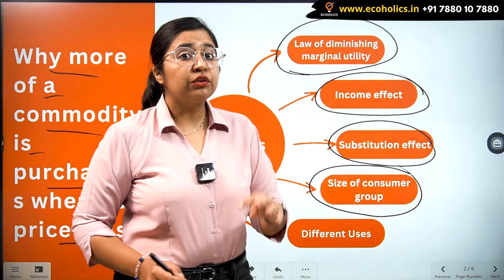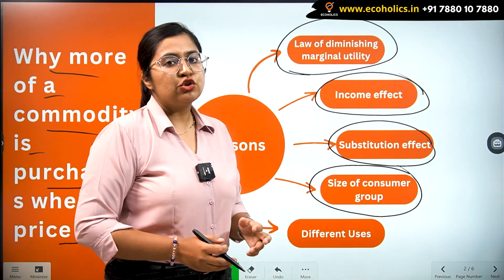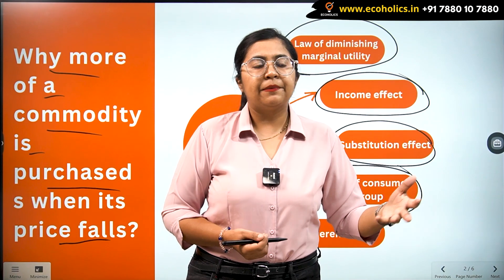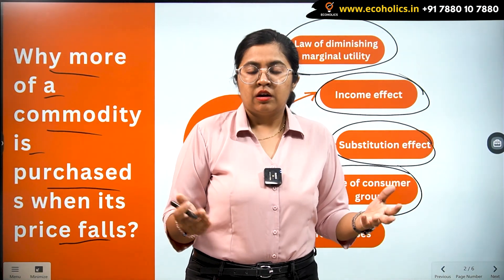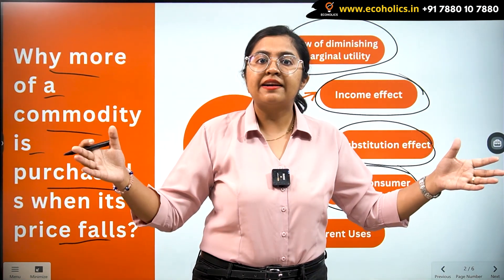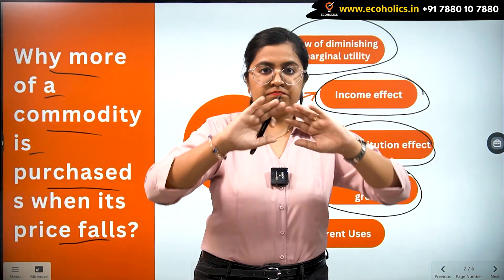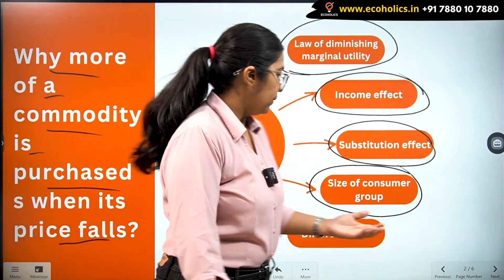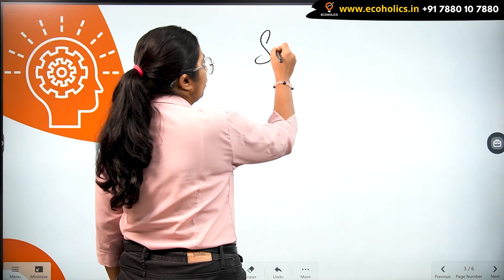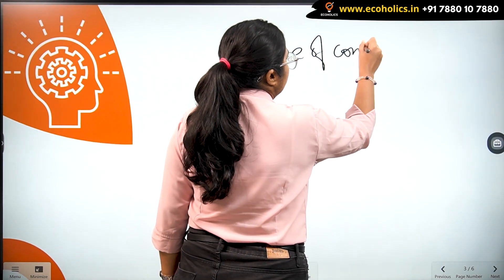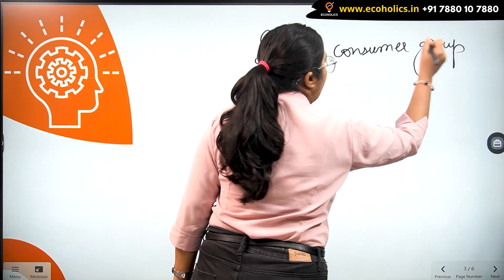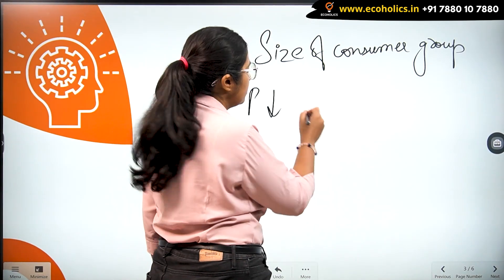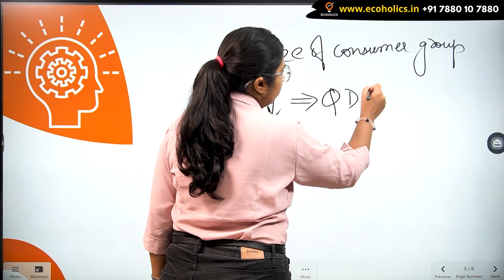The fourth reason is the size of the consumer group. When the price of a commodity falls — for example, a certain tea or coffee brand — more consumers are going to consume that particular brand, so the size of the group expands. When the size of the consumer group expands, the total demand expands. When the price of a commodity decreases, the quantity demanded increases — this is the law of demand: the inverse relationship between price and quantity demanded.